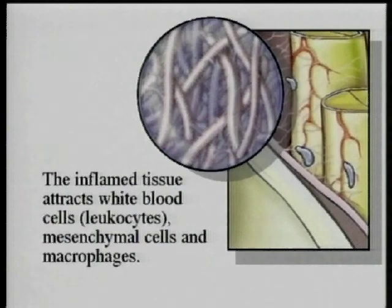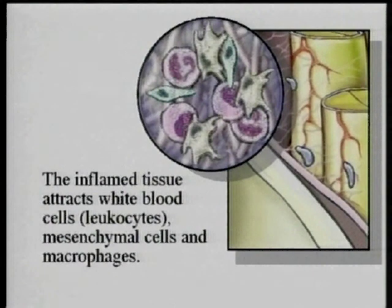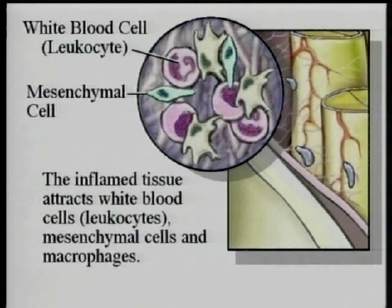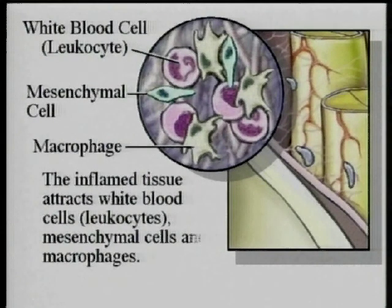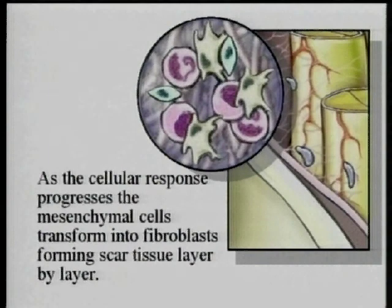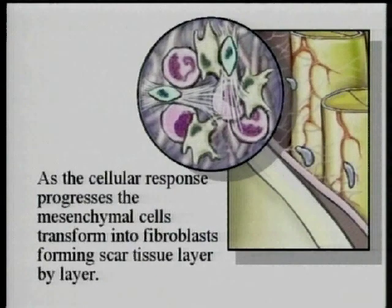The reaction or influence of the dye promotes a secondary inflammatory response. Initially it is composed of white blood cells, leukocytes, mesenchymal cells, and macrophages — the cells that ingest or attempt to ingest foreign bodies. As the cellular response progresses, the mesenchymal cells transform themselves into fibroblasts. These are the cells that form collagen and form scar tissue. Scar tissue is, in fact, collagen.